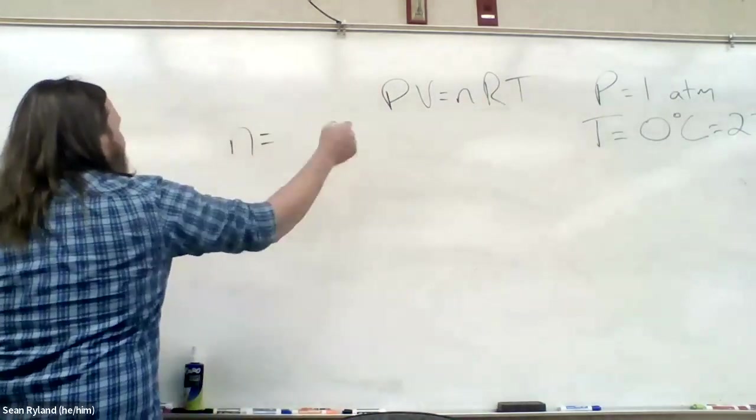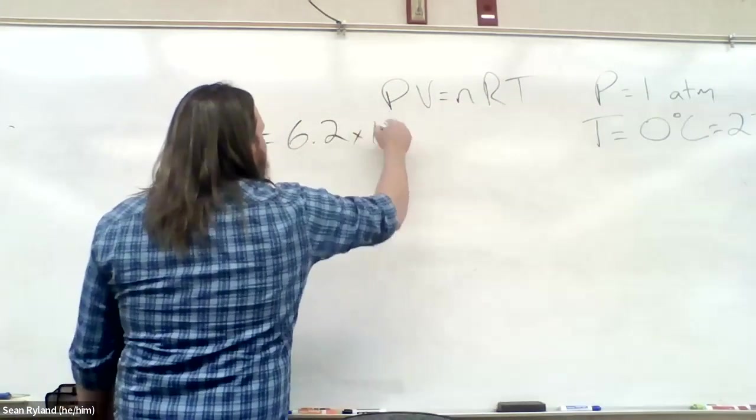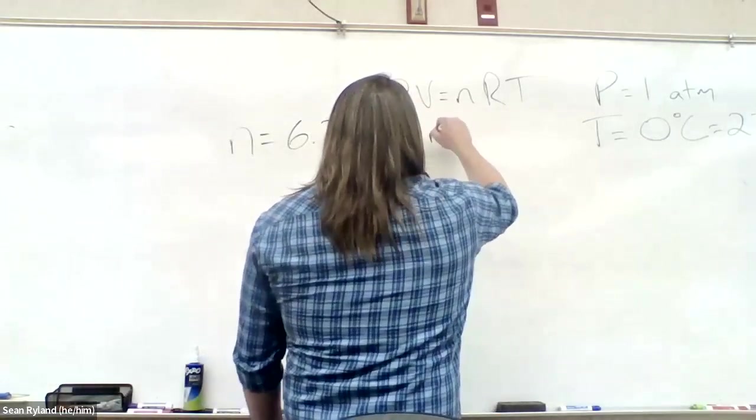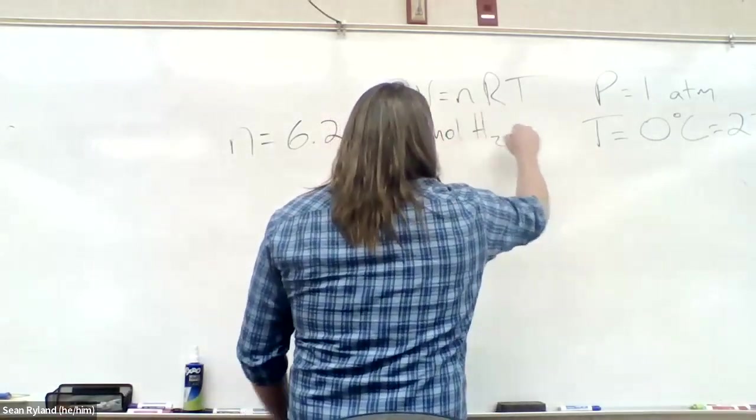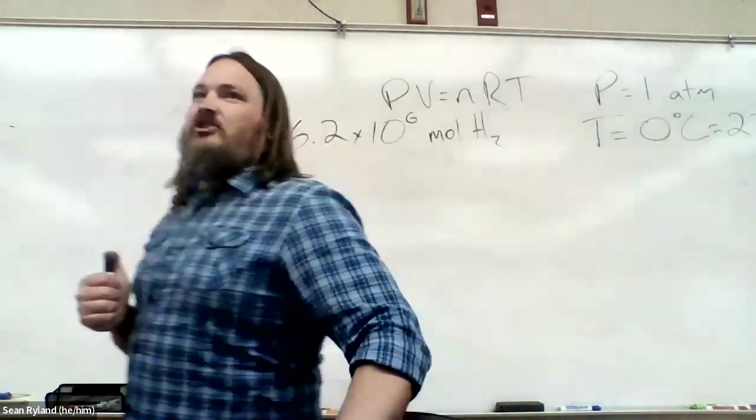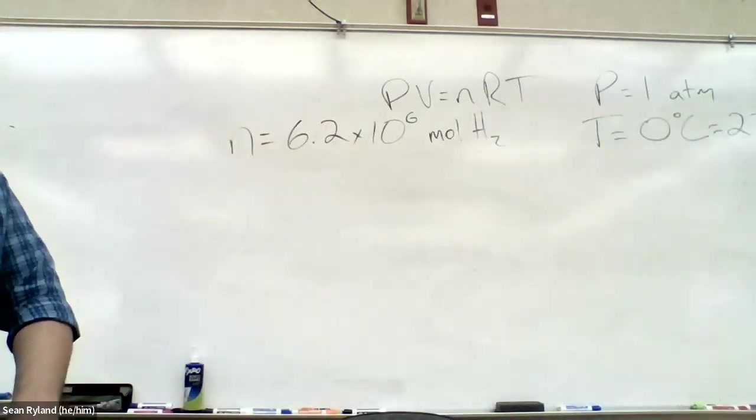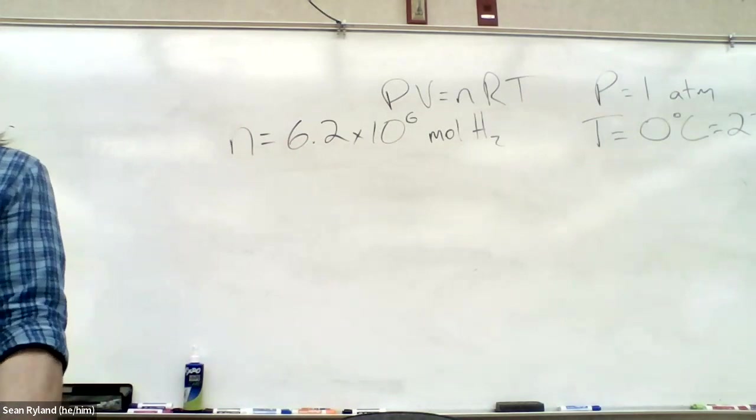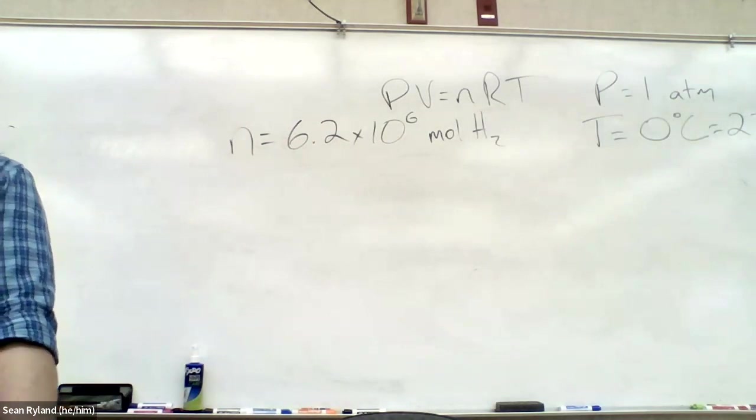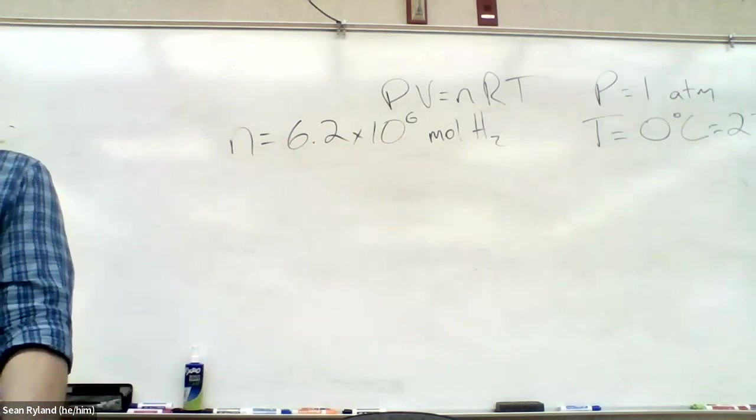Alright, so let's finish this up. What do we say? 6.2 times 10 to the 6 moles of hydrogen. So if the reaction is hydrogen inside the ship and it reacted with oxygen explosively to form water as a gas as the product, what is that? How do we write that reaction out? Try writing that out from the description and balancing it on your own.